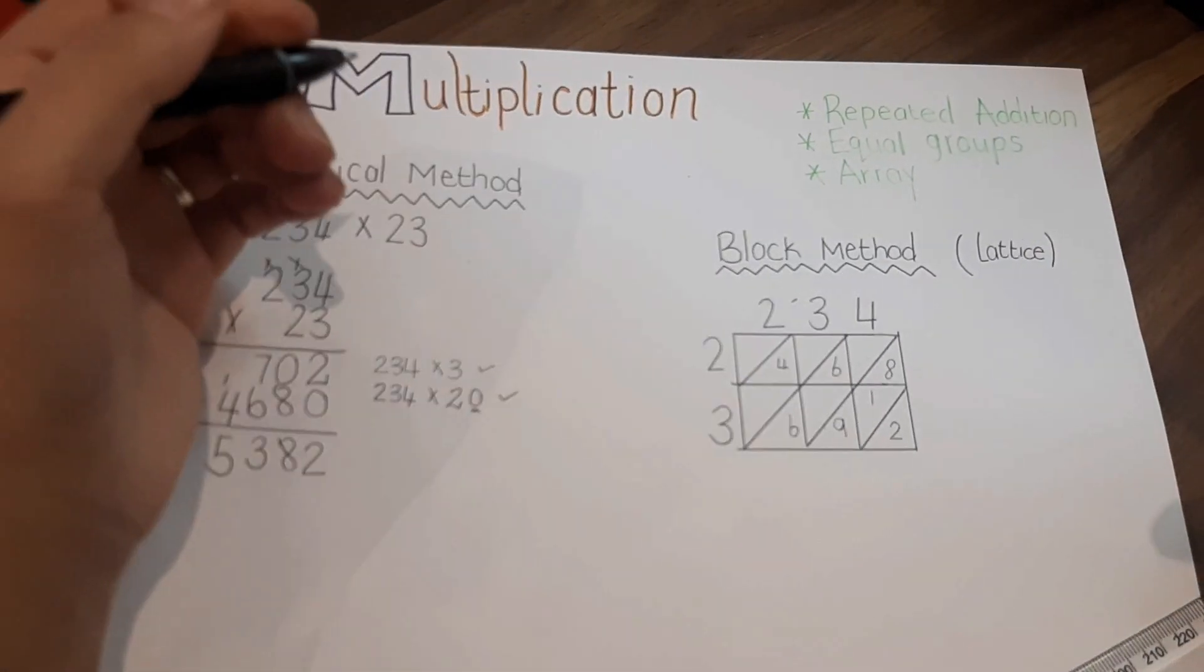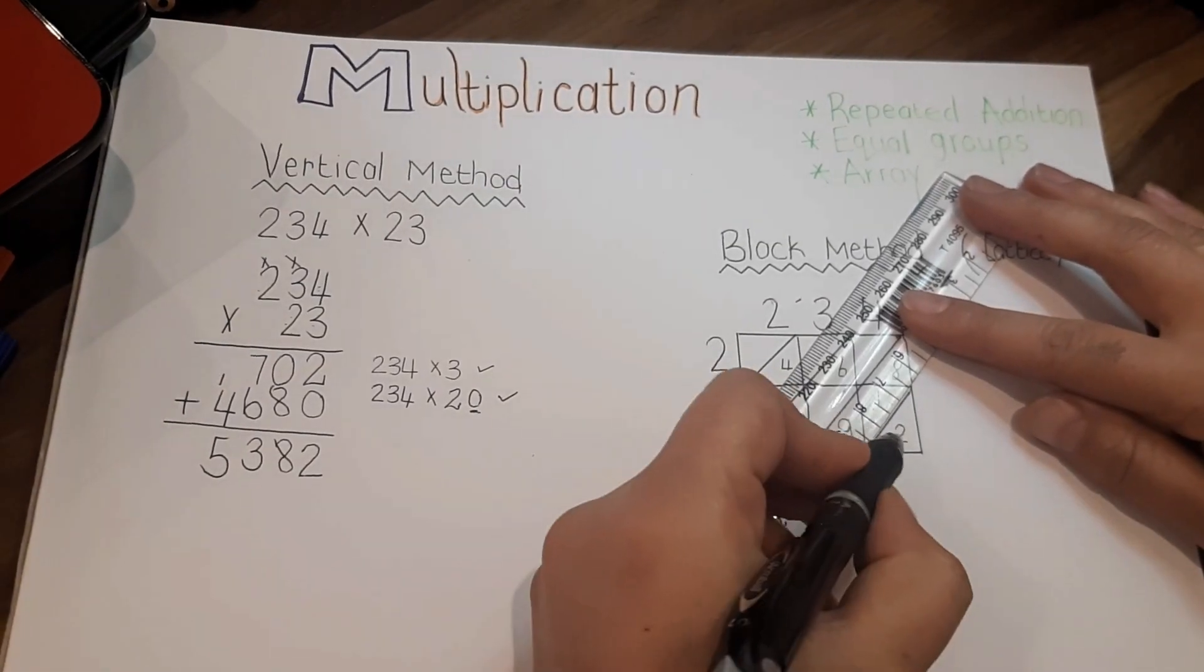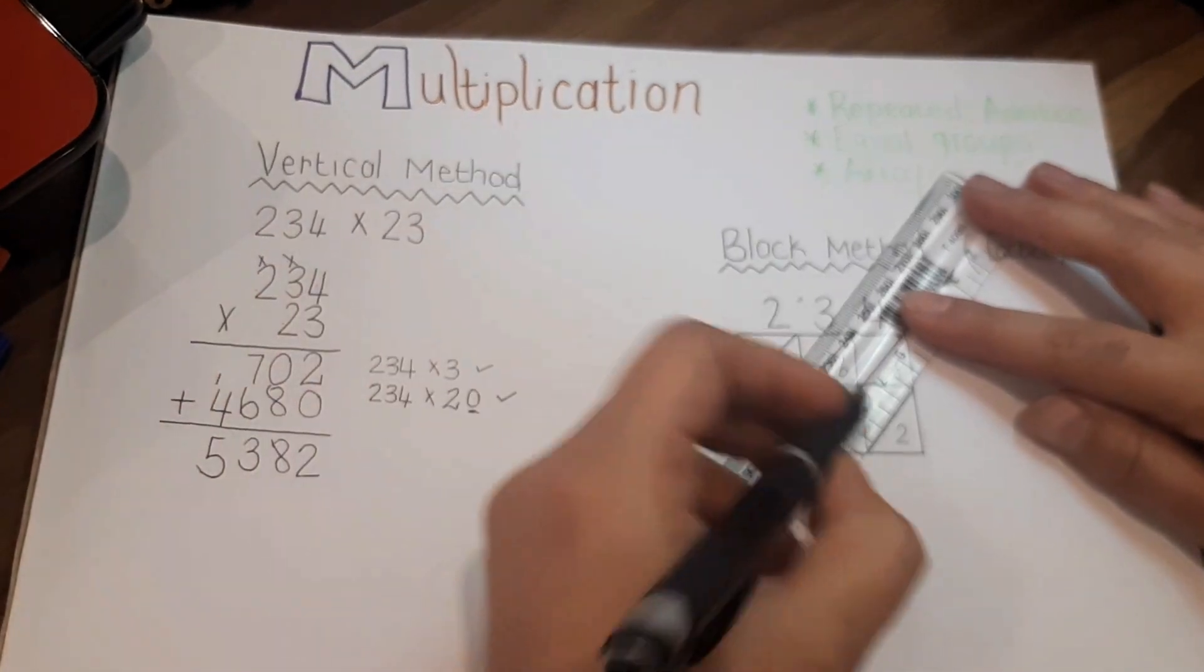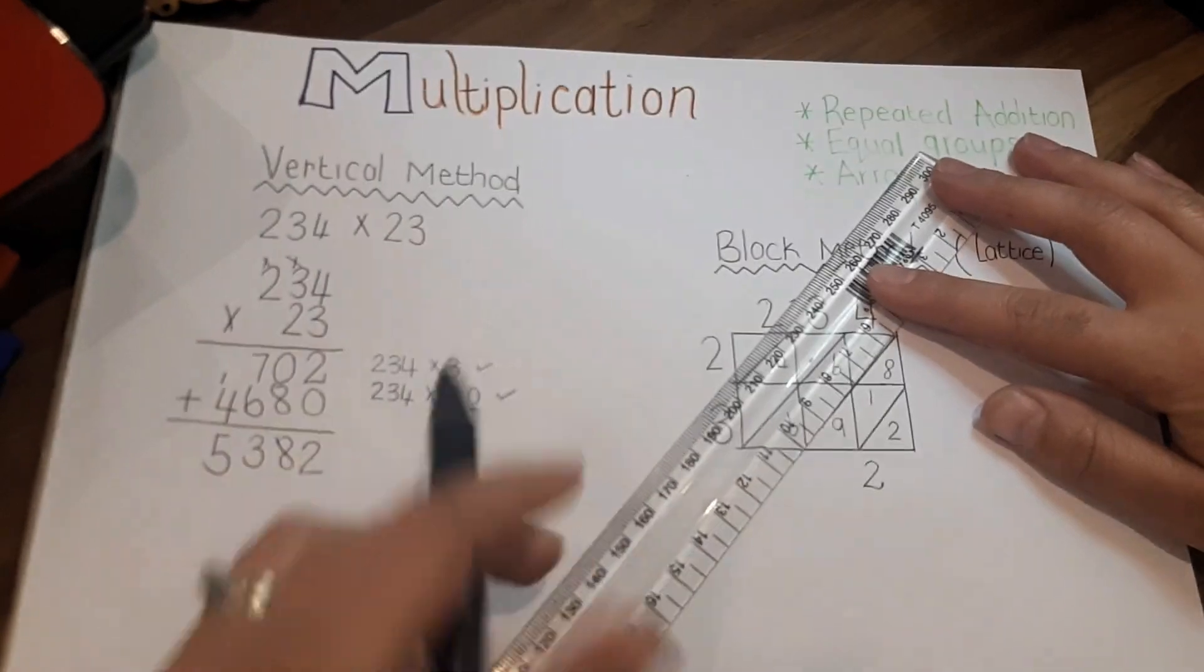And then you did all your multiplication. Now we are going to do our addition part. So I like to take my ruler as a guideline.